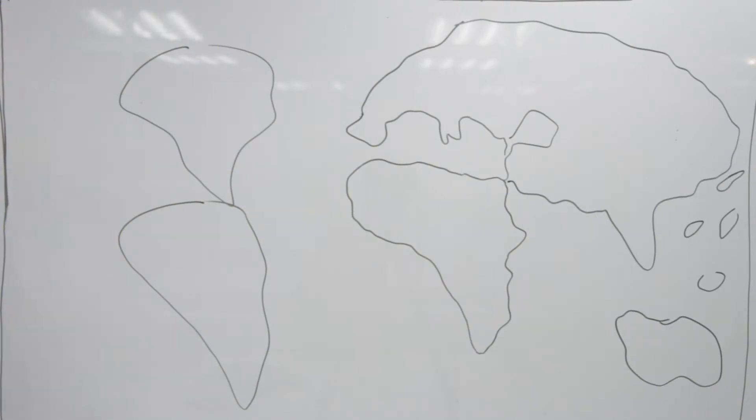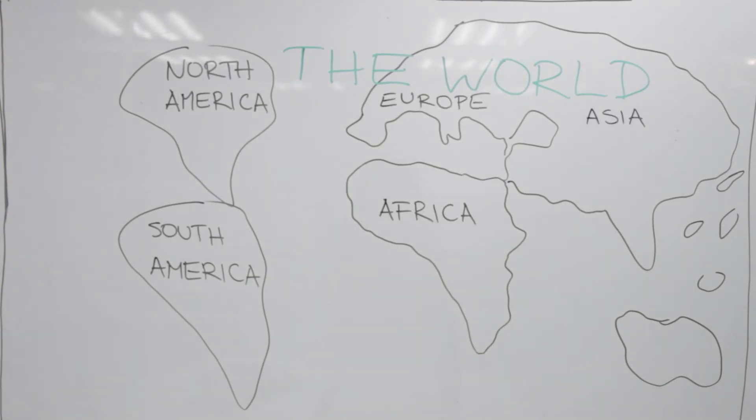Hello kids, today I'm going to draw something and I want you guys to tell me, do you recognize it? Yes, it's the map of the world. Sort of. We have North America, South America, Europe, Africa, Asia, and Australia.